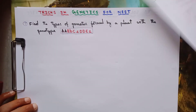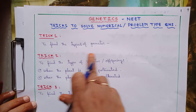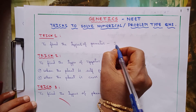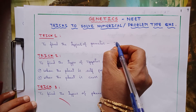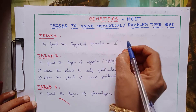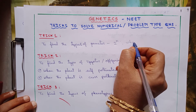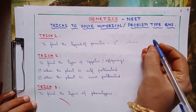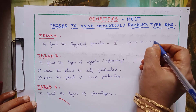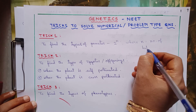To find this, we can use a trick — the formula 2 power n, where n is the number of heterozygotes in the given genotype.